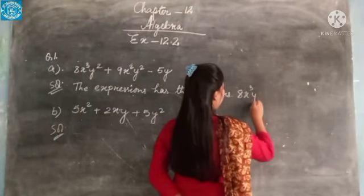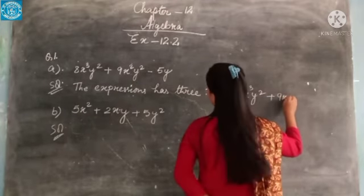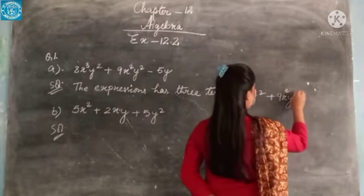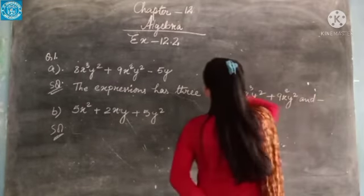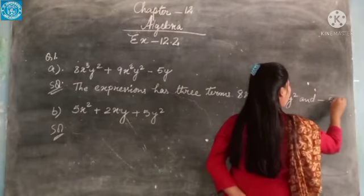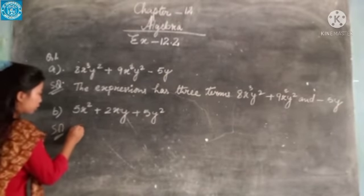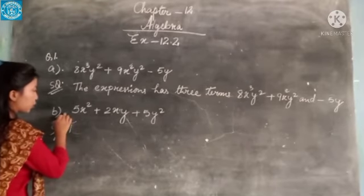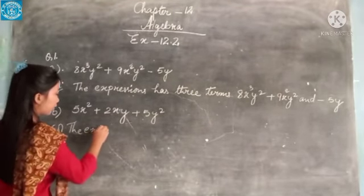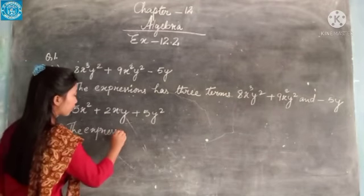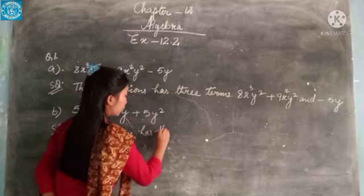The expression is: x²y² + 9x²y² − 5y. Counting the terms: 1, 2, 3. So the expression has 3 terms.